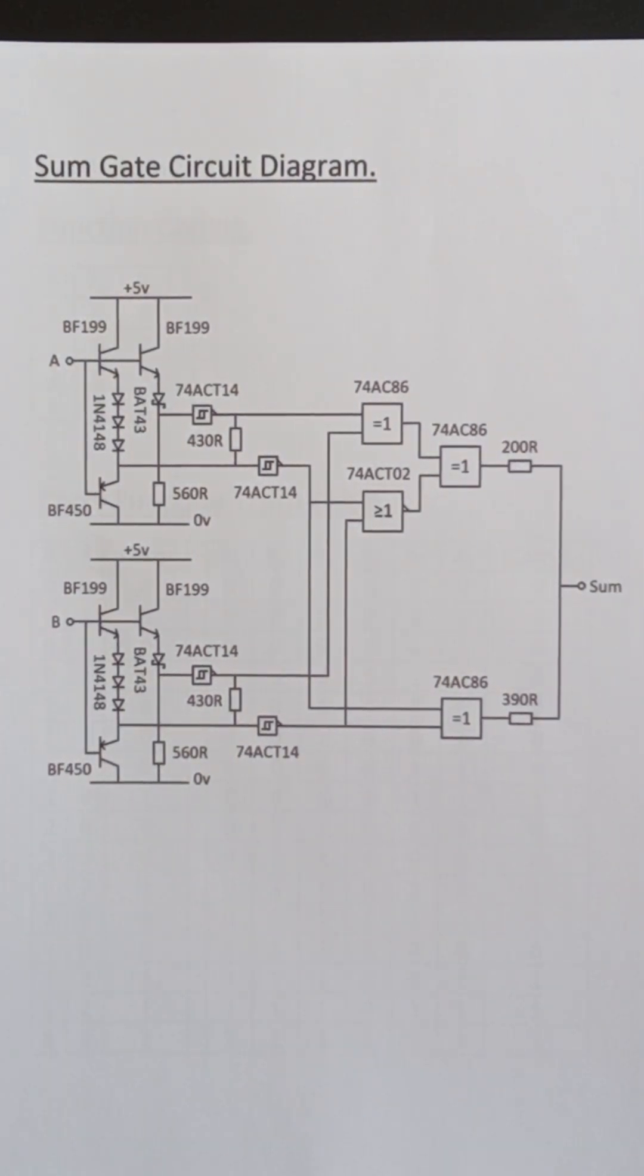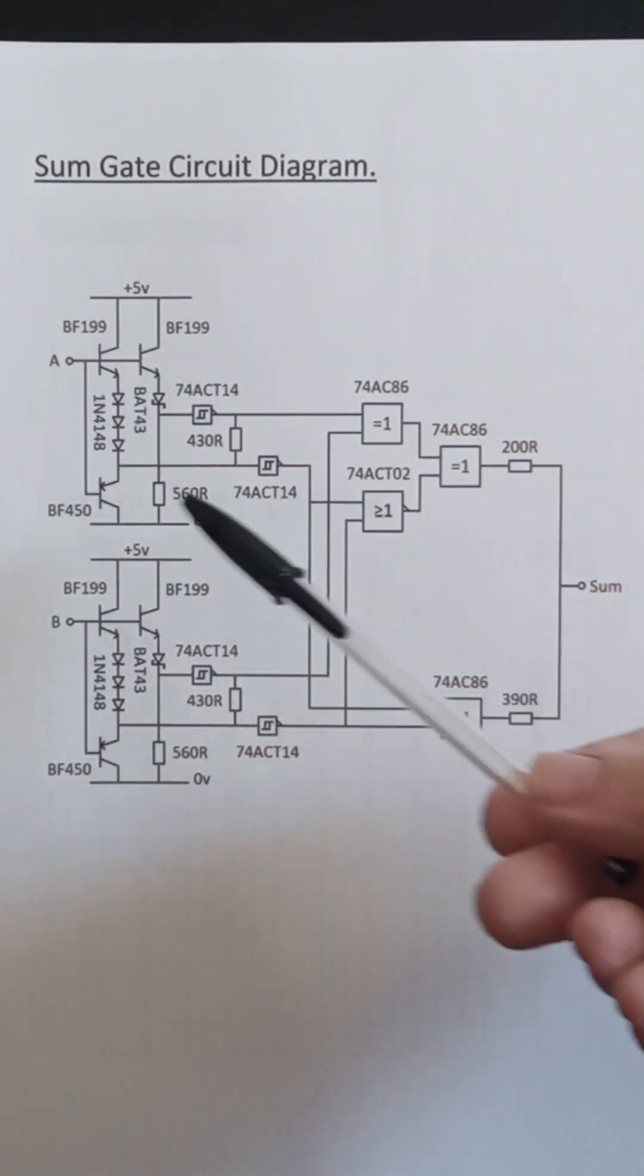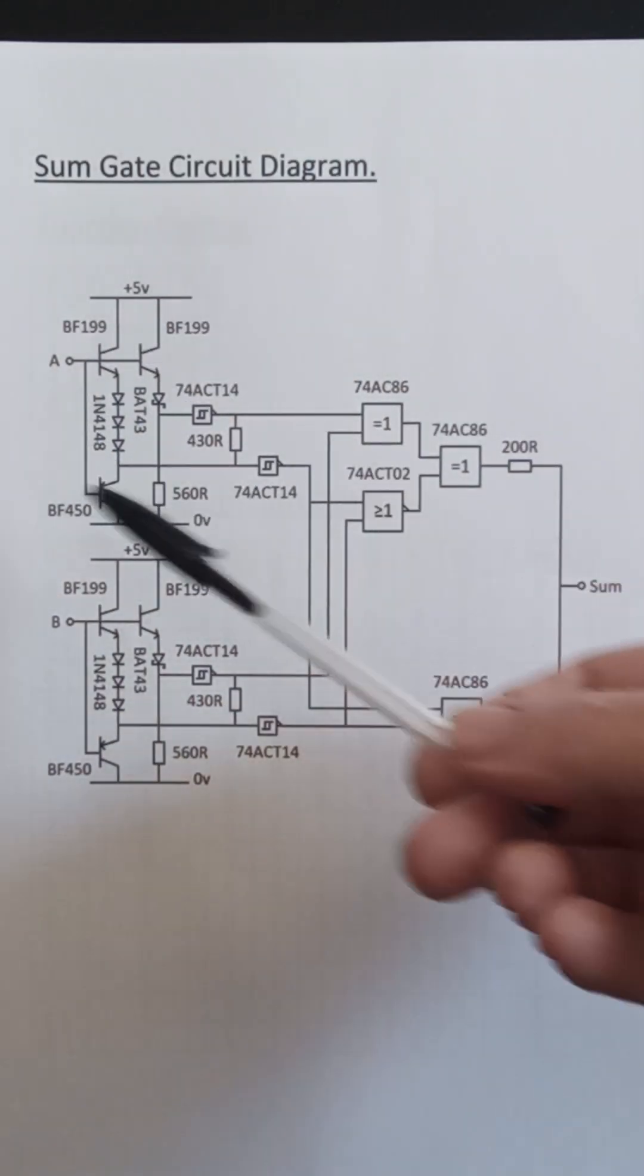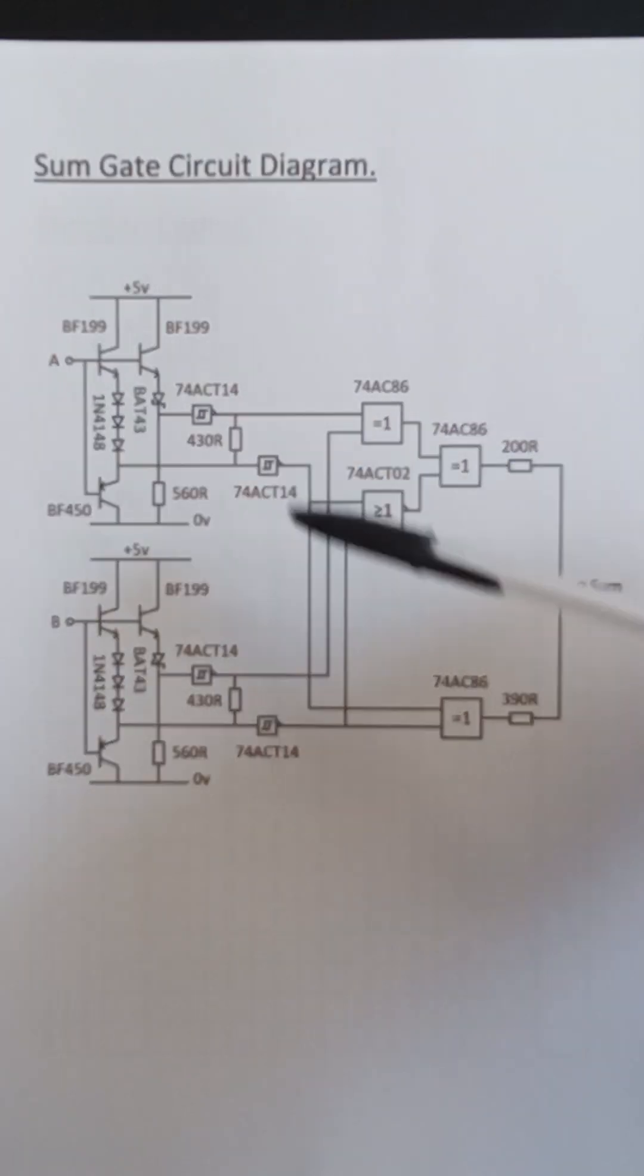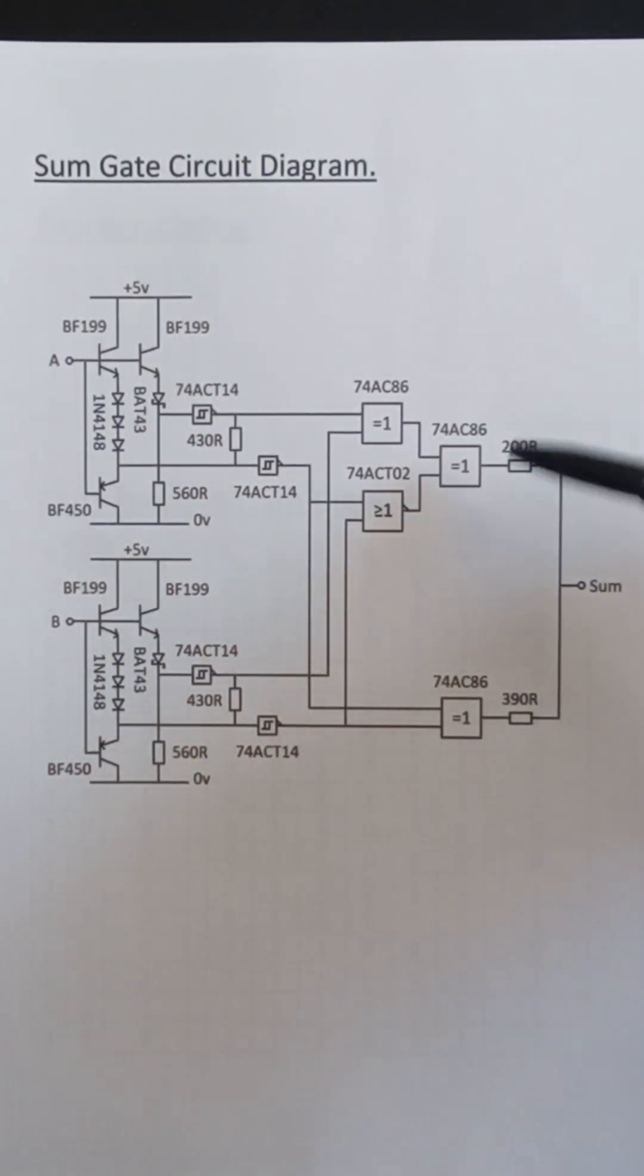Here we have the sum gate circuit diagram. Here I'm using quaternary to binary conversion here and here, just straight coding. And then I'm processing it in binary here and converting it back to quaternary here. So this is the output of the sum function. These are the exclusive or gates 74ACX6 and exclusive nor gates 74ACTO2, and exclusive or gates here. So the output impedance is about the parallel combination of these resistors which is about 130 ohms.